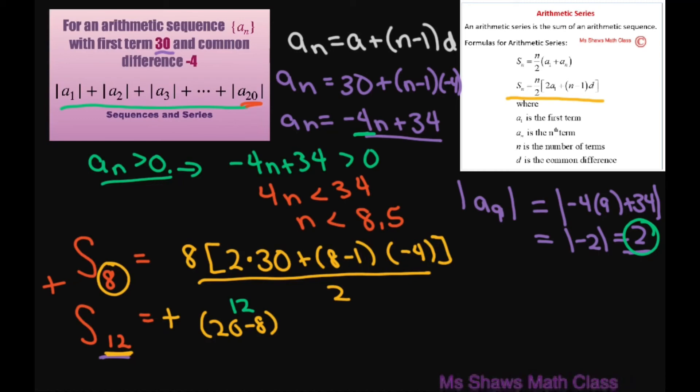For this, it's 2 times your first term which is 2, plus (12-1) times 4, all divided by 2.